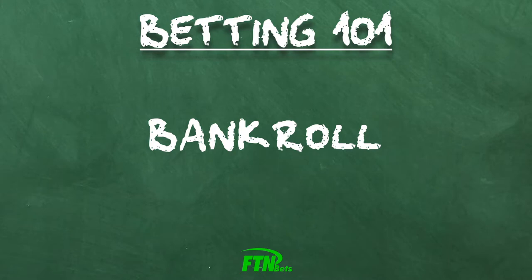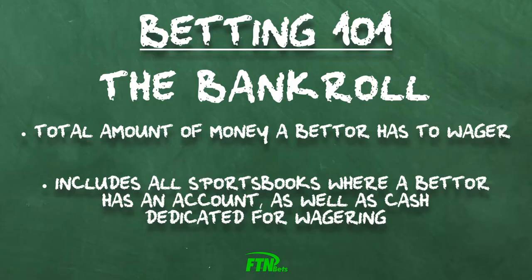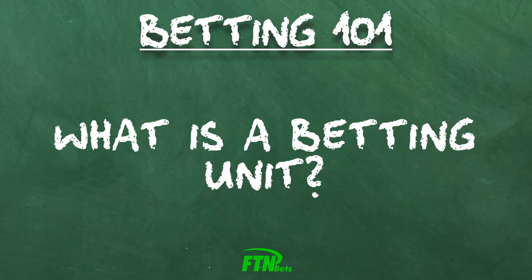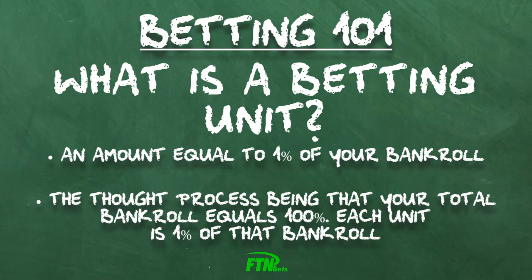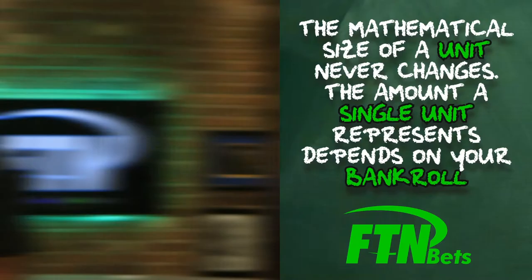The total amount of money a bettor has to wager is their bankroll. This includes all sports books where the bettor has an account as well as cash dedicated for wagering. A unit is an amount equal to 1% of your bankroll — the actual dollar amount can be different for everyone. So when people discuss their plays, they'll often speak of how many units they'll place on that particular bet. Someone with a $100,000 bankroll will have a unit size of $1,000. If you have $100, your unit size is $1.